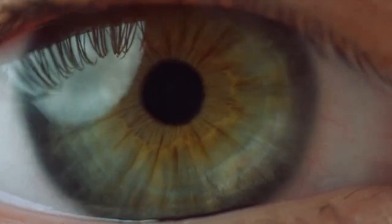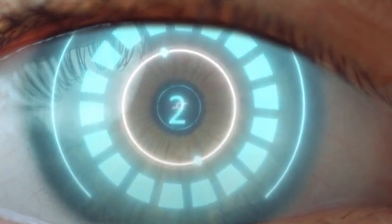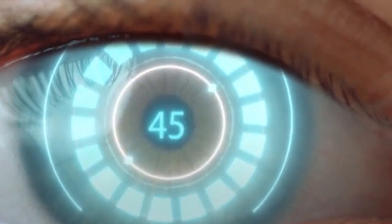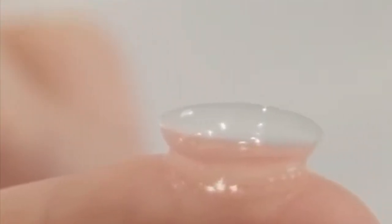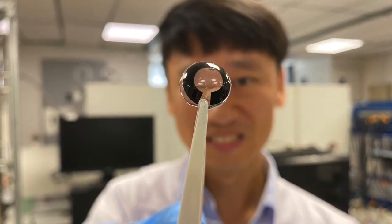Smart contact lenses promise to display information onto your corneas for augmented reality and with tiny sensors correct your vision, monitor your health, treat diabetes or glaucoma and even record what you see with tiny cameras.